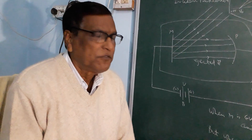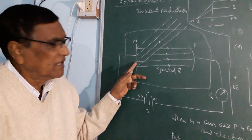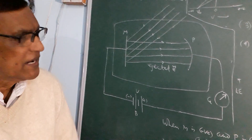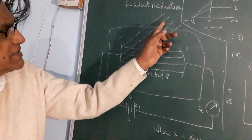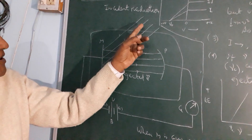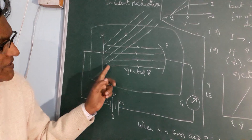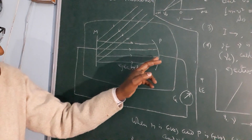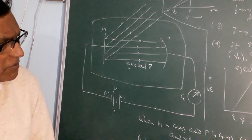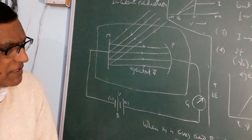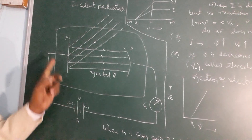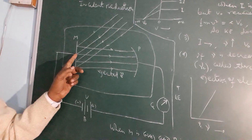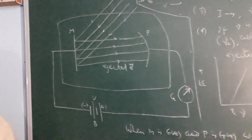Whenever monochromatic radiation of suitable frequency falls on a metal plate, the electrons are ejected. Here, P is the electron collector, M is the clean metal plate, and this is the incident monochromatic radiation. The ejected electrons are recorded by a galvanometer, which records the current strength that we call the photocurrent.